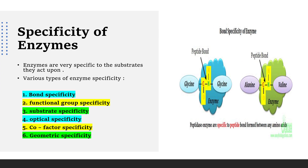Now let us look at a unique property of enzymes: specificity. Enzymes will act only on a particular type of molecule. Unless the correct substrate comes into contact with the enzyme, the enzyme remains non-functional. As soon as the correct substrate contacts the enzyme, it starts working. Specificity is classified into six categories: bond specificity, functional group specificity, substrate specificity, optical specificity, cofactor specificity, and geometric specificity.